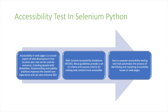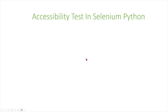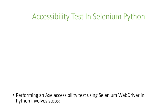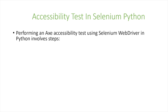In Selenium Python there's a tool called axe. Axe is a popular accessibility testing tool that automates the process of identifying and reporting accessibility issues on web pages. Here I'll show you some basic commands that you need to use in order to use axe in Selenium Python.